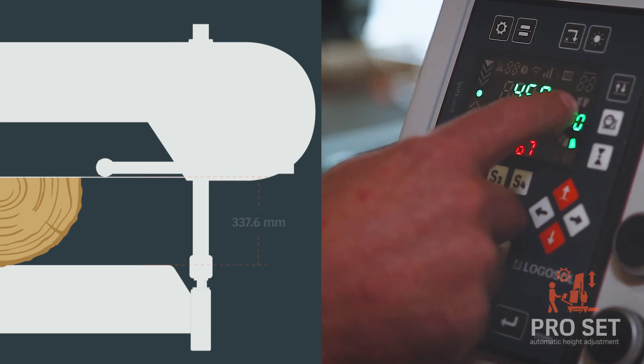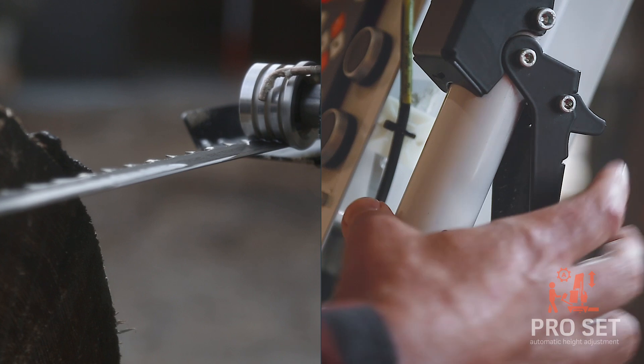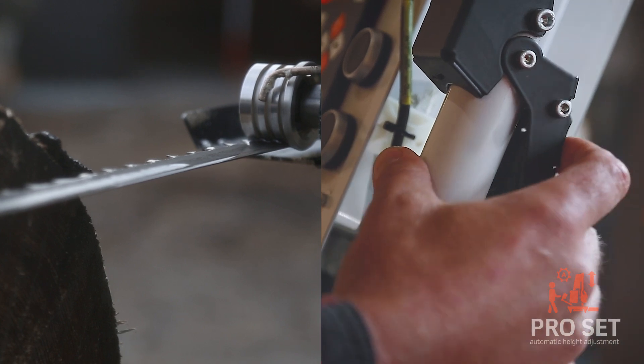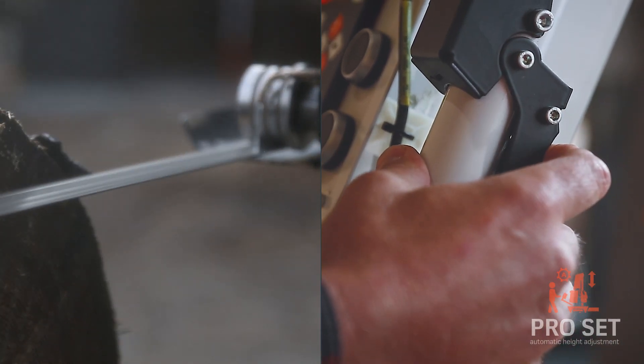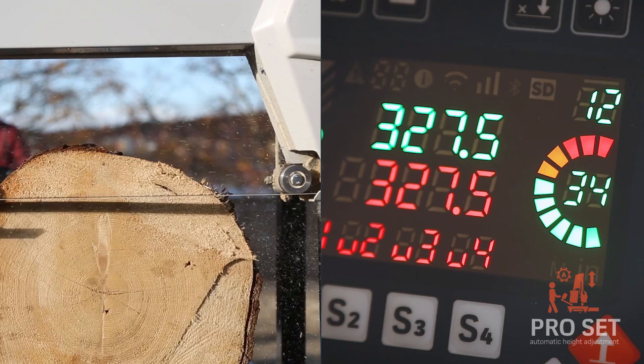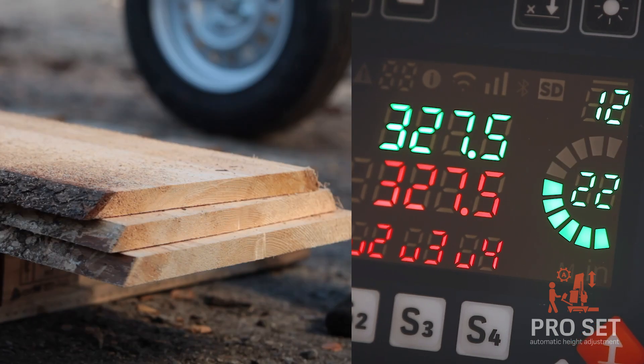We have an ampere meter. So when you give gas on this one, you will see the ampere meters turn yellow and red. So you should be on the yellow mark to saw straight boards.